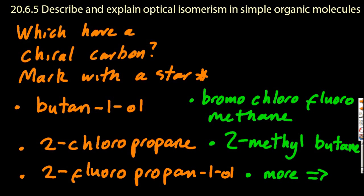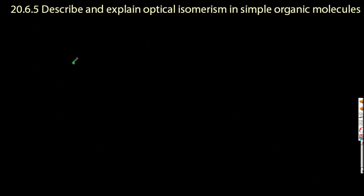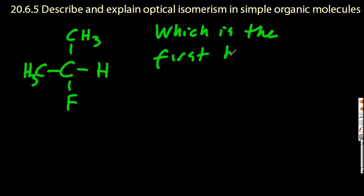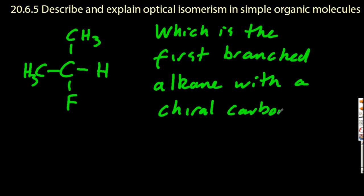All righty, welcome back. This is one trick the IB used a few years ago. It does not have a chiral carbon. But people got confused with the CH3 and the H3C. Of course, that's the same thing. That's a methyl group. Don't fall for that trick. And if I was to ever write a question for the IB, my one would be, which is the first branched alkane with a chiral carbon.